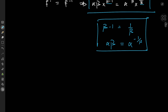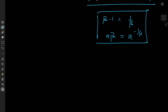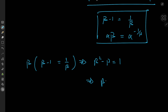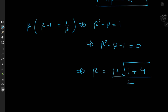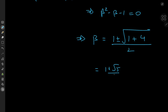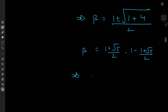Comparing exponents gives β−1 = 1/β, and comparing coefficients gives α·β = α^(−1/β). From the first equation: β²−β = 1, so β²−β−1 = 0. Applying the quadratic formula gives β = (1 ± √5)/2. The two values are (1+√5)/2 and (1−√5)/2, which we recognize as the golden ratio φ and 1−φ. So β = φ or β = 1−φ.